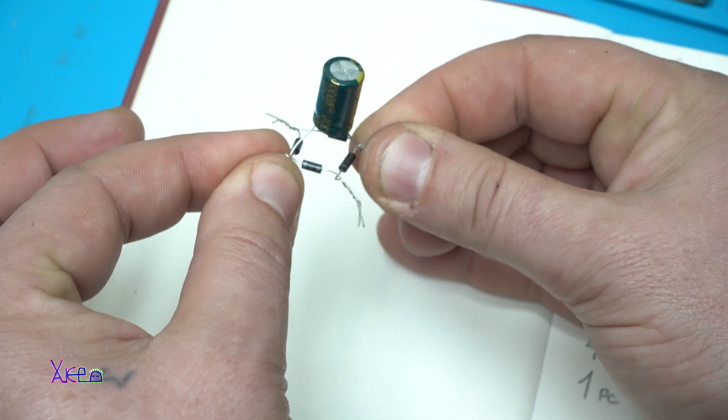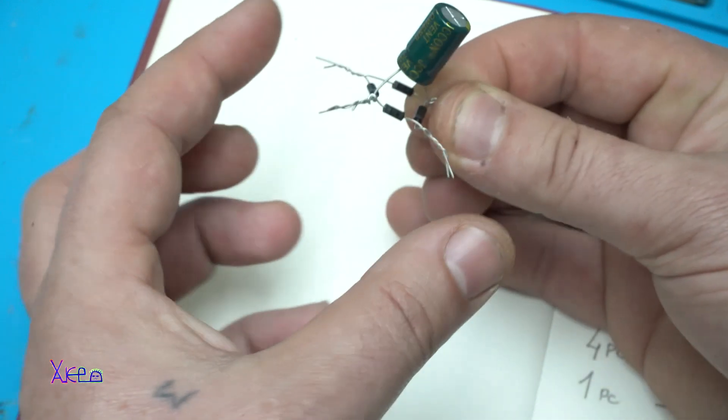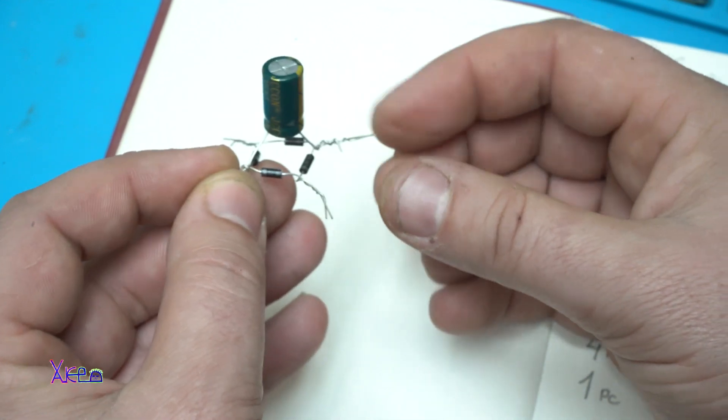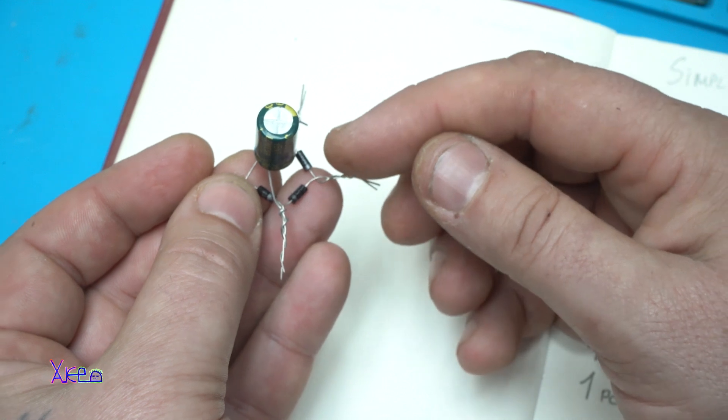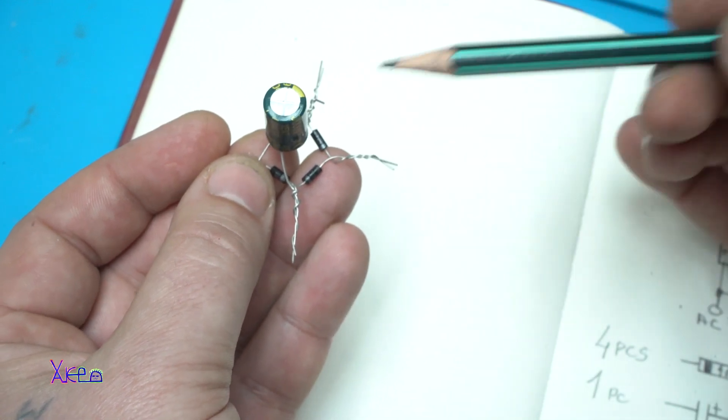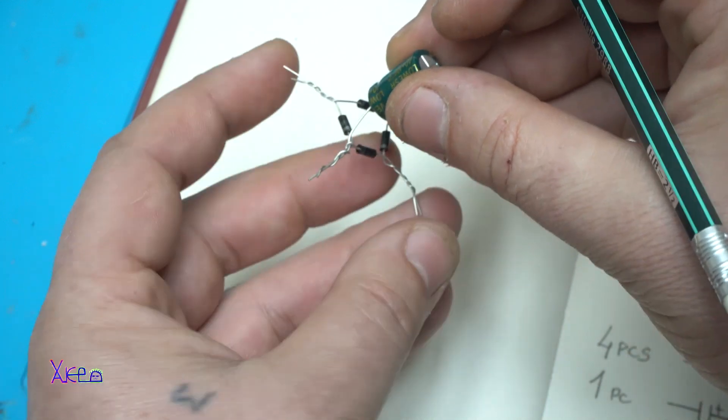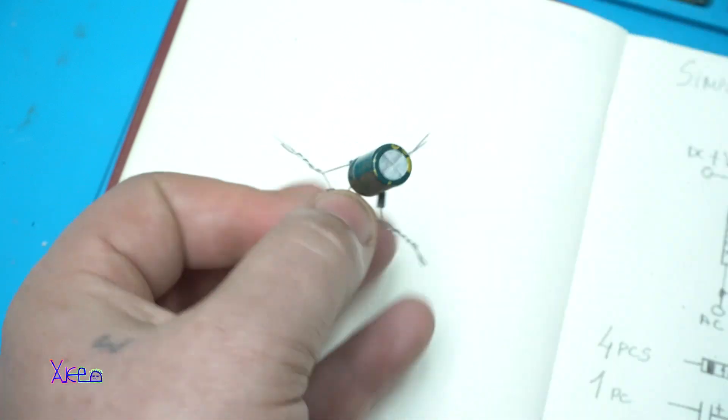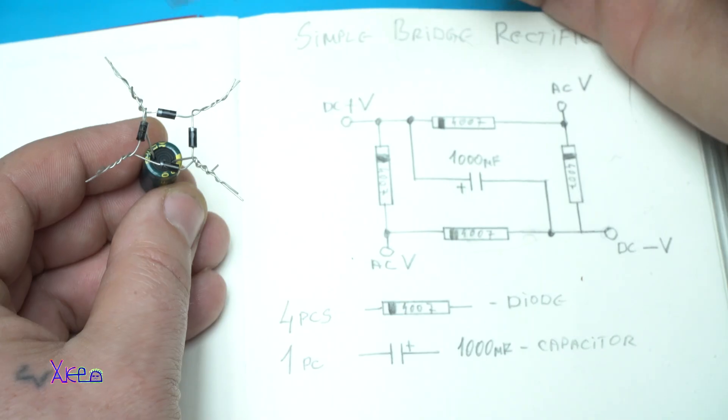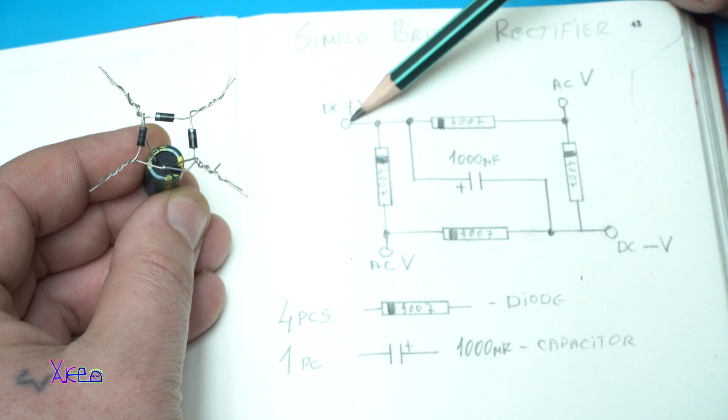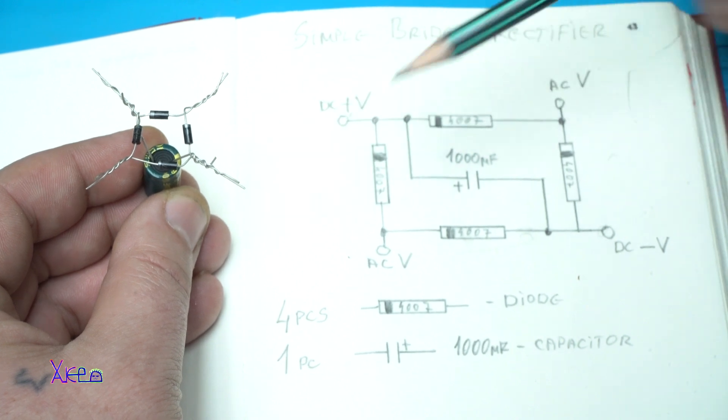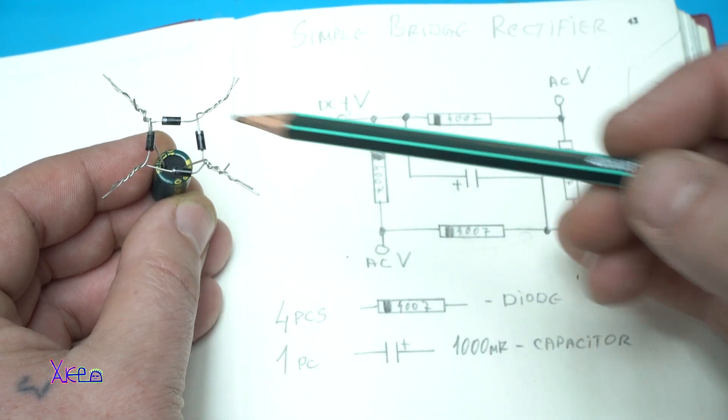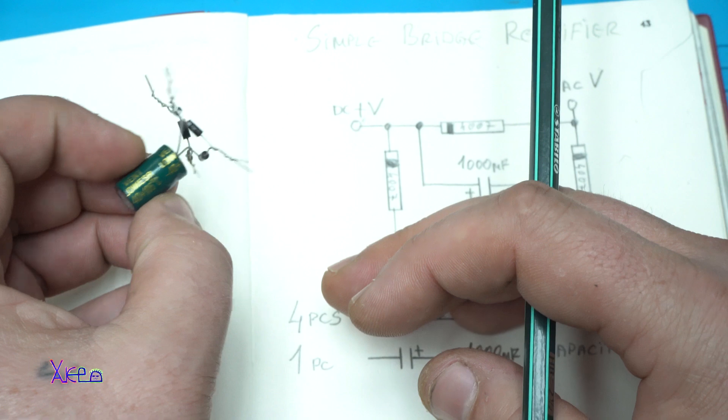Now we have completed the bridge rectifier with the capacitor. This one is the negative, this is the positive output voltage, and on these ends we connect the AC voltage coming in. AC voltage will come on different polarity of the diodes from the opposite sides. Here we have a positive, this is the negative, AC1, AC2, and in the middle between positive and negative we connect the capacitor.